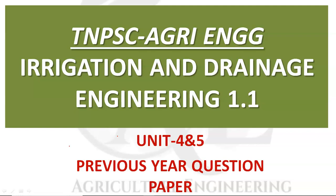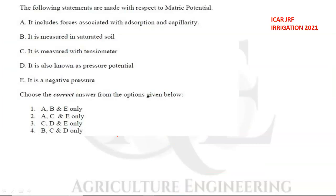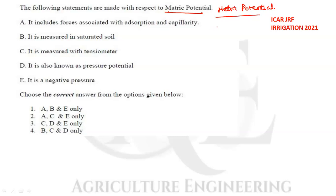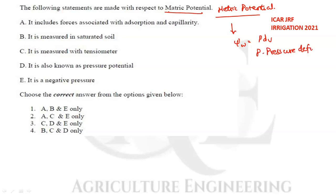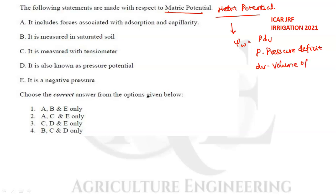We will solve questions from previous year question papers. The first question involves statements about metric potential. Metric potential is denoted by ψw and the formula is p·dv, where p denotes the pressure deficit and dv denotes the volume of water. Metric potential is a negative pressure potential.